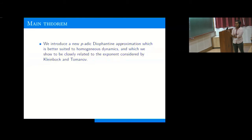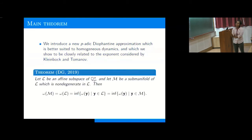The theorem is exactly the p-adic analog of Kleinbock's earlier work: that Diophantine exponents are inherited by non-degenerate manifolds inside an affine subspace. Moreover, the exponent of the measure will be the infimum of all the exponents of individual points.